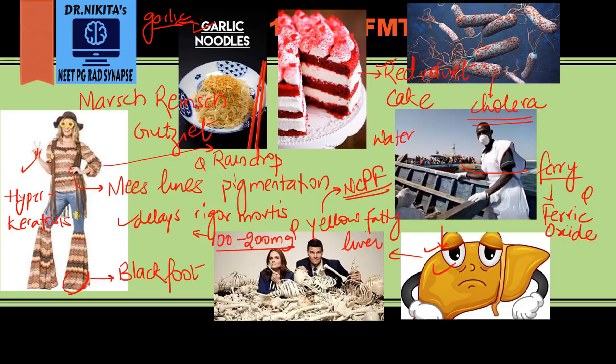Once the patient dies, you will not take a blood sample because arsenic clears from blood very soon, and you will not take a liver sample either. Instead, you sample bones, hair, and nails — remember the mummies: bones, hair, and nails are sampled after death for arsenic poisoning.